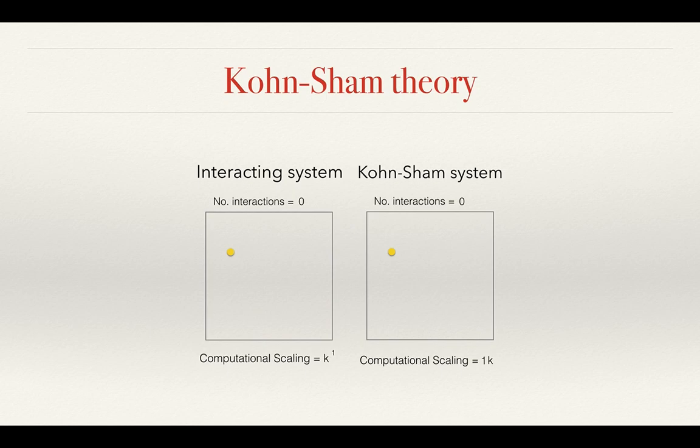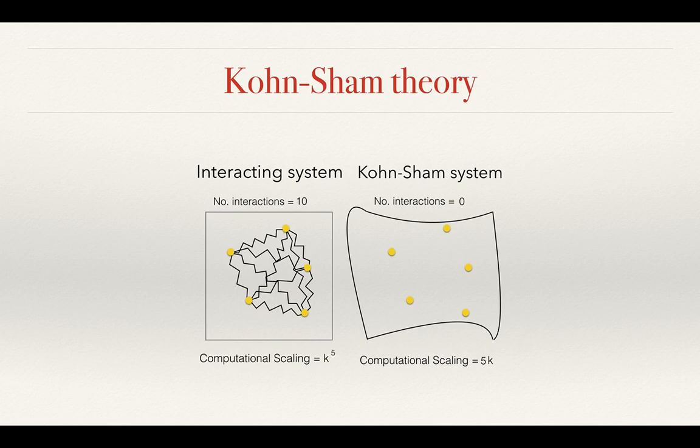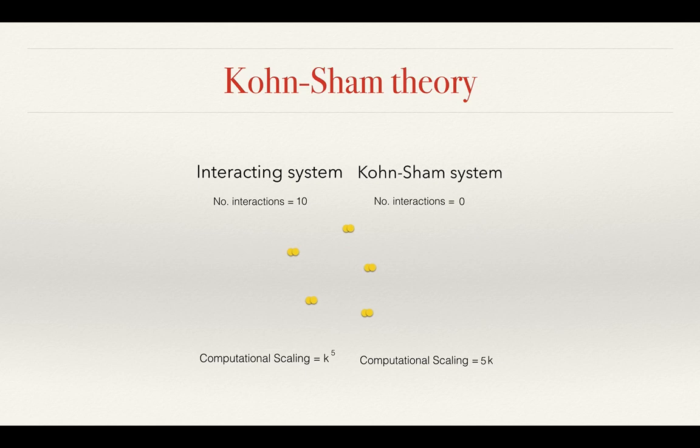The Kohn-Sham system is defined as a system of non-interacting electrons, which yields the exact many-body density of the interacting electrons. In the many-body system, as the number of electrons increases, the number of interactions between them also increases. In the Kohn-Sham system, the electrons are fully non-interacting, but the potential that they feel changes such that the Kohn-Sham density always gives the many-body density. This potential is known as the Kohn-Sham potential.